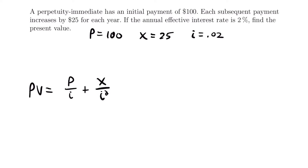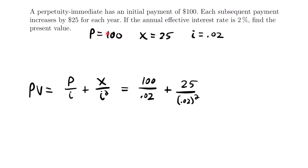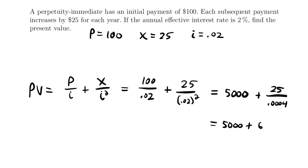It's always good to check that your interest rate has the same frequency as your payment cycle. In this case, we have an annual effective interest rate and payments made every year, so we don't have to worry about converting. Now we plug in the values: the present value equals 100 divided by 0.02, plus 25 divided by 0.02 squared. So 100 divided by 0.02 equals 5,000, and 0.02 squared equals 0.0004.